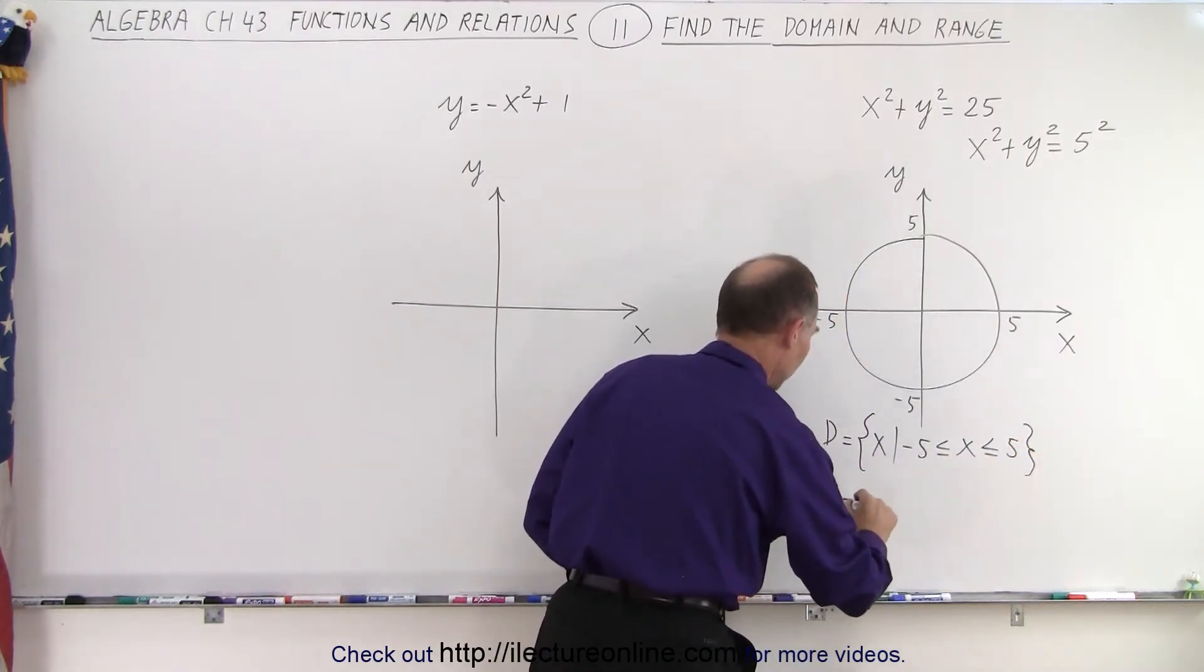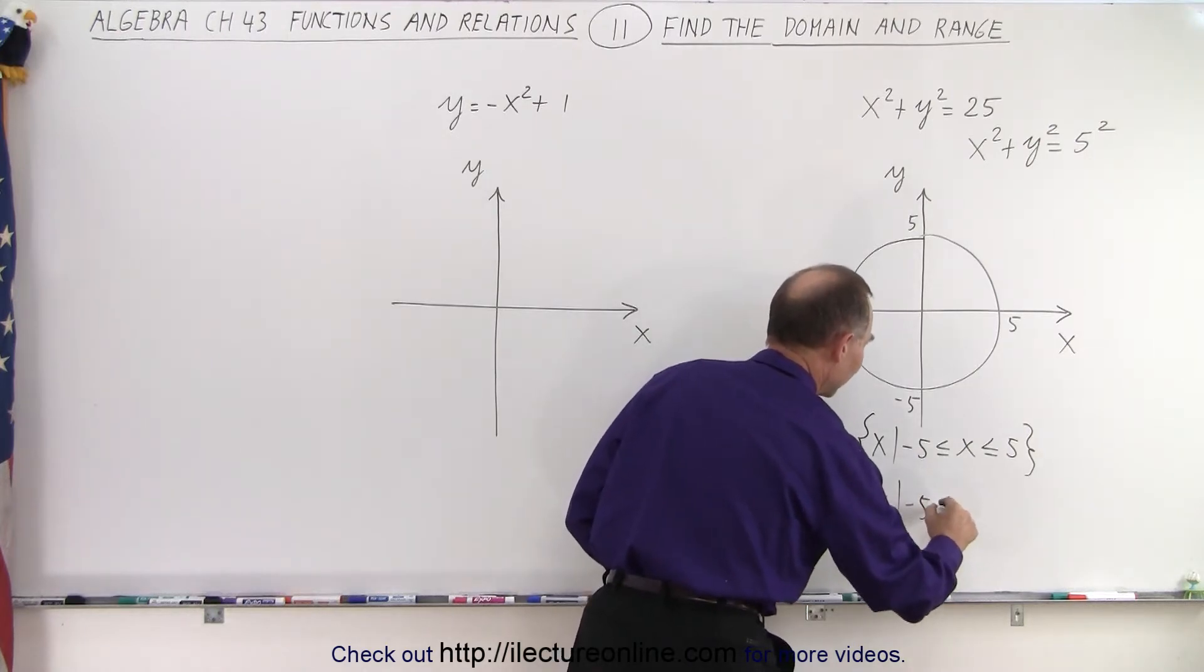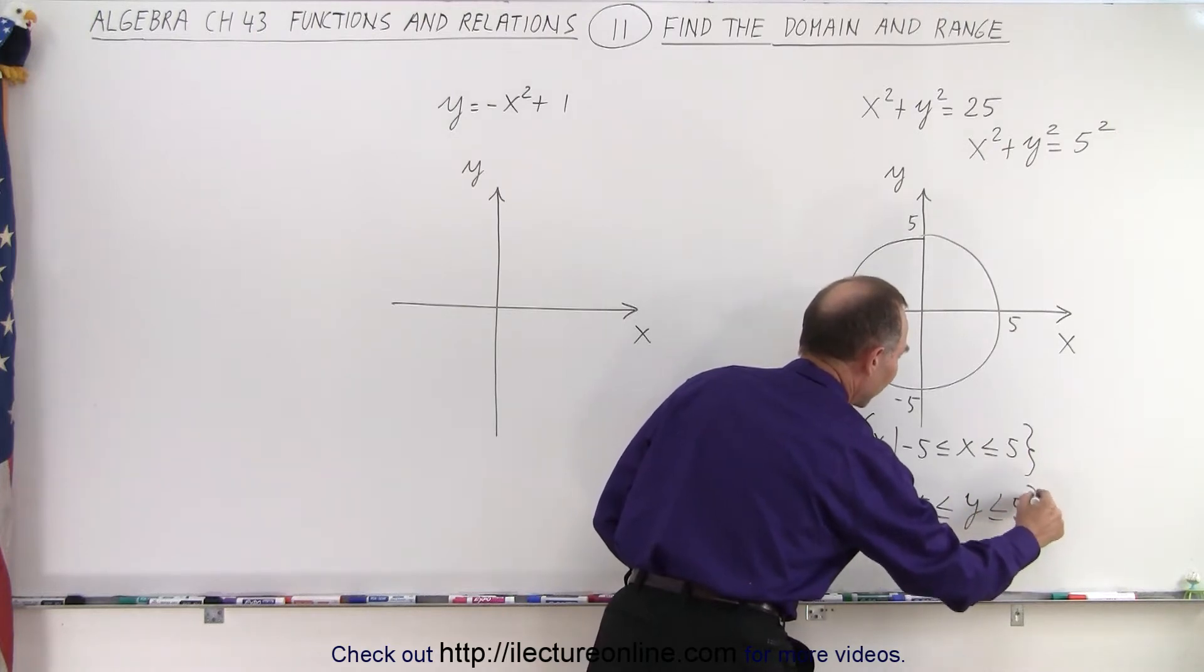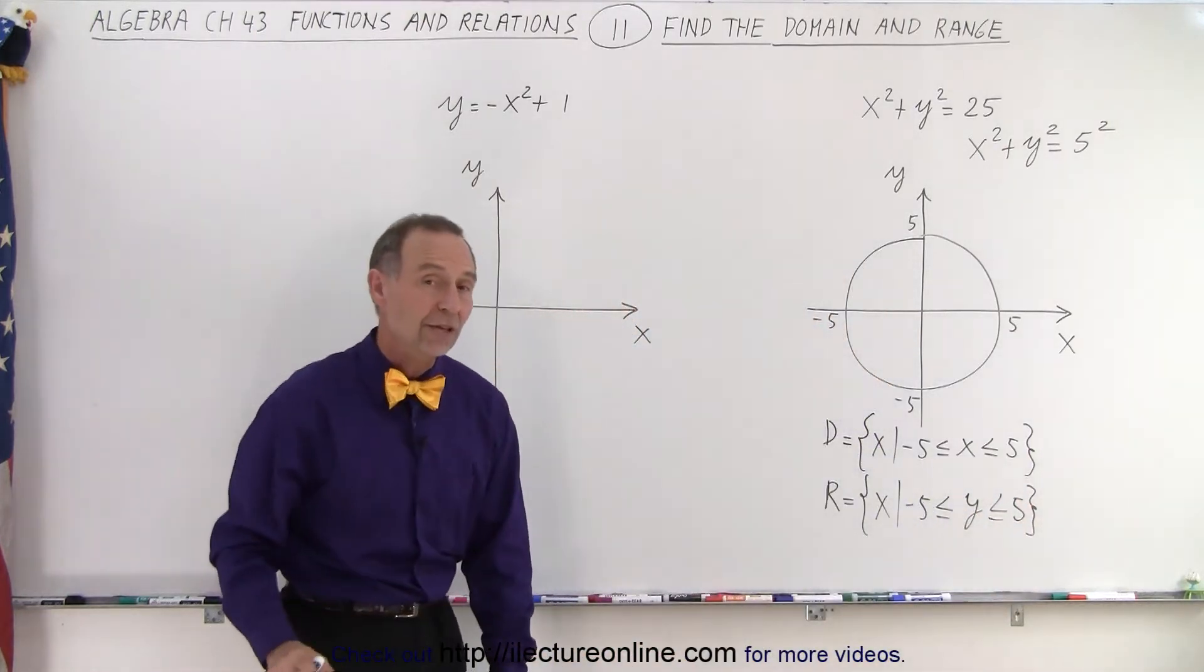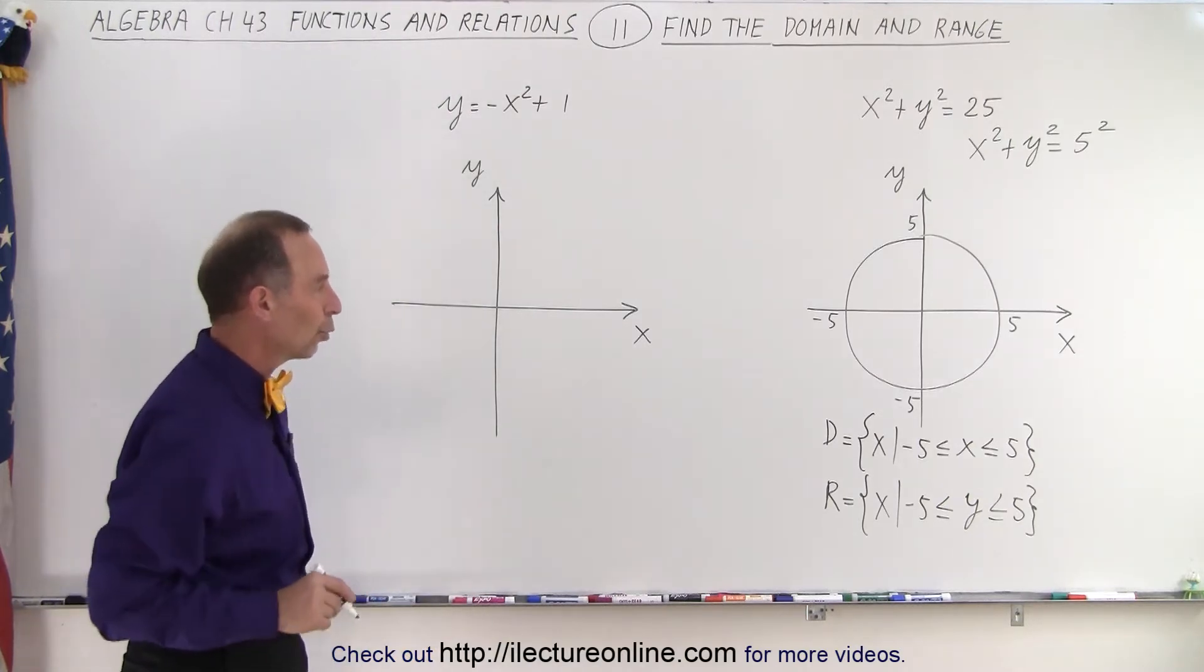And the same for the range that's equal to all the values x such that negative 5 is less than or equal to y which is less than or equal to positive 5. So clearly the domain and the range are exactly the same when you have a circle with the center at the origin.